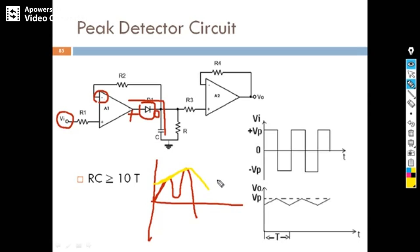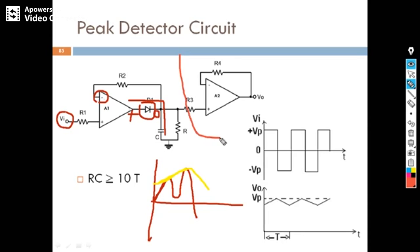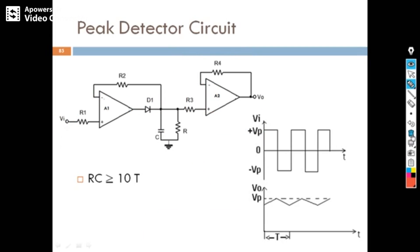Please note, here we are trying to detect the positive peaks, not negative peaks. This is the way our peak detector works. Now the question comes — what about this second circuit diagram? Because of its high input impedance, this will act like a buffer for our capacitor. This is about the peak detector.